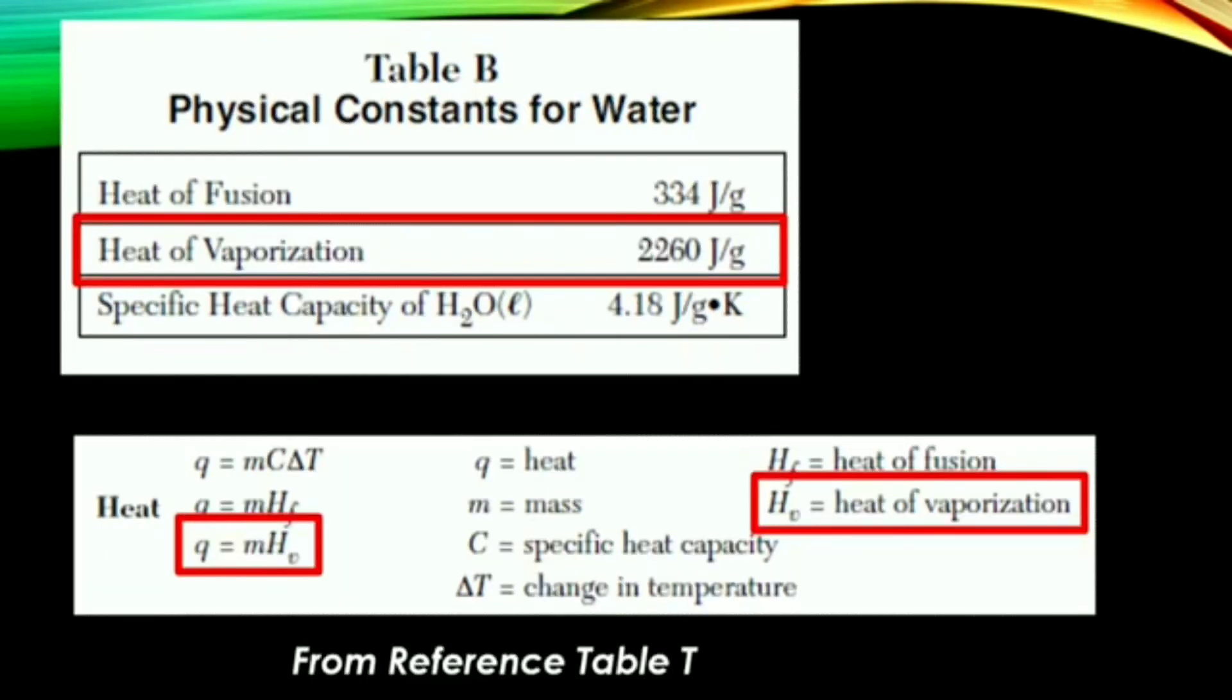So when solving problems where the temperature, again, is not changing, but we are changing a phase between a liquid and a gas, we are going to have to use the heat equation with the heat of vaporization. Remember, the heat of vaporization for water is on reference table B. If the substance is not water, you'll have to be given it in the question, as the heat of vaporization is different for every substance.